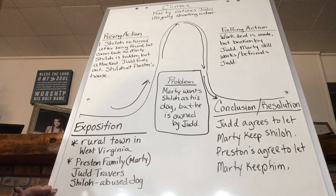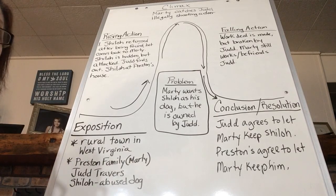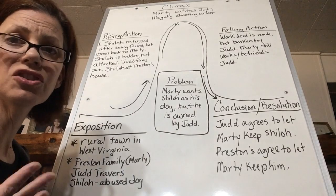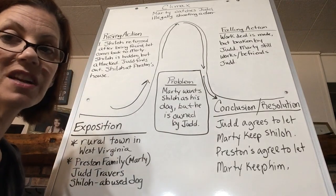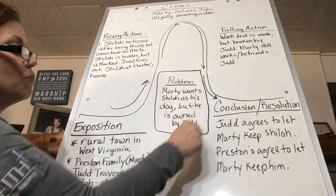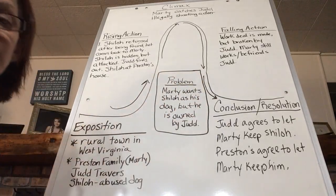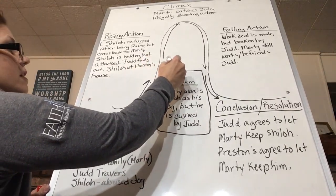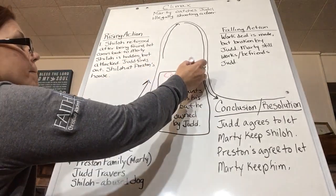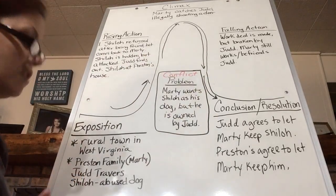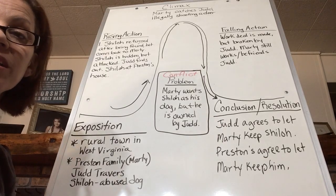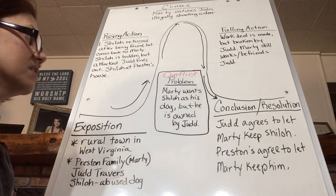The only thing I thought was missing from this plot mountain was a place to put the problem, because every story has a problem — a conflict. In the middle of the mountain, find a place to write in this box: write the problem, or conflict. The conflict for Shiloh is that Marty wants Shiloh as his dog, but Shiloh is owned by Judd. That is what needs to be solved: how is Marty going to get Shiloh to be his dog?